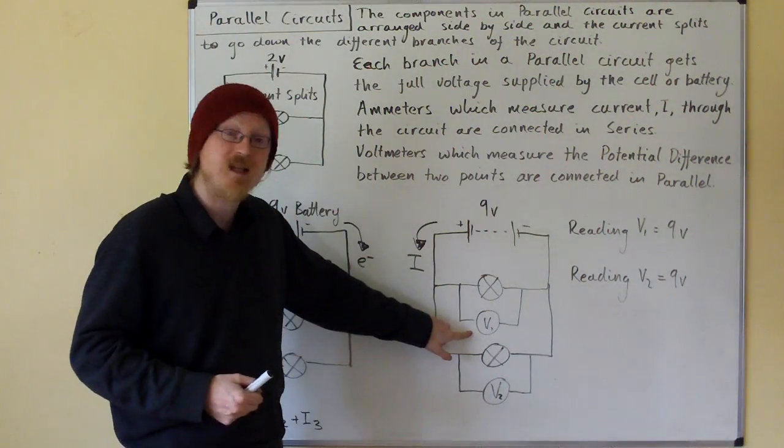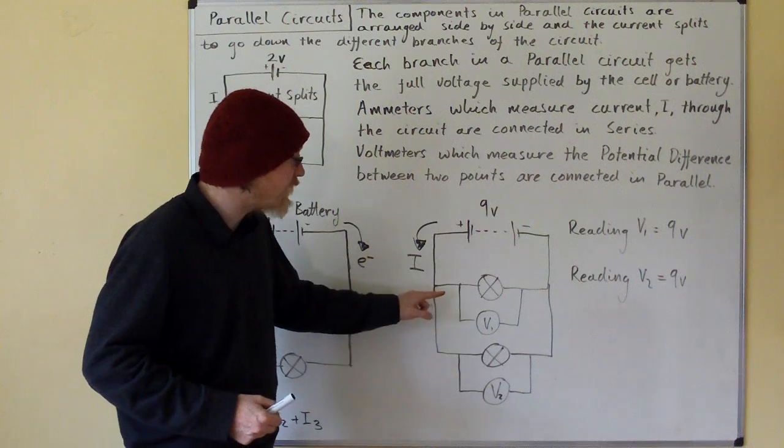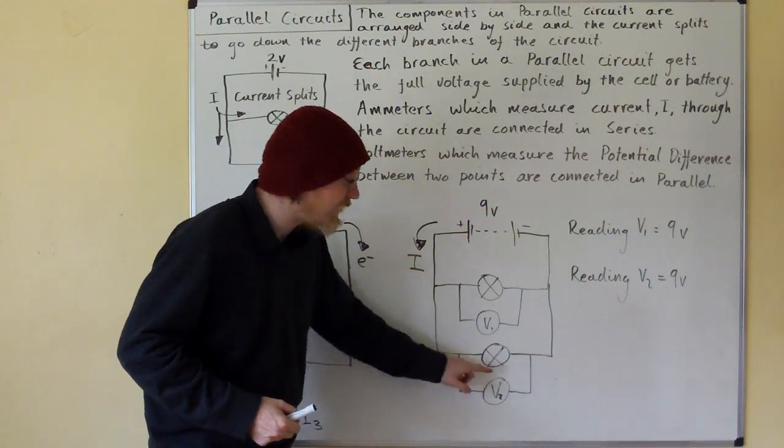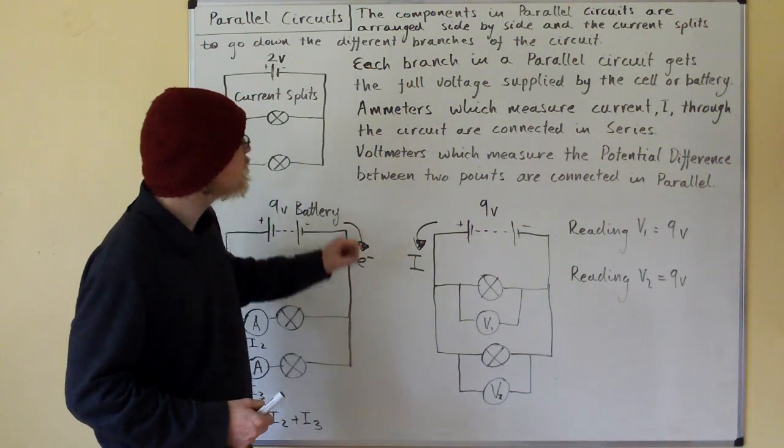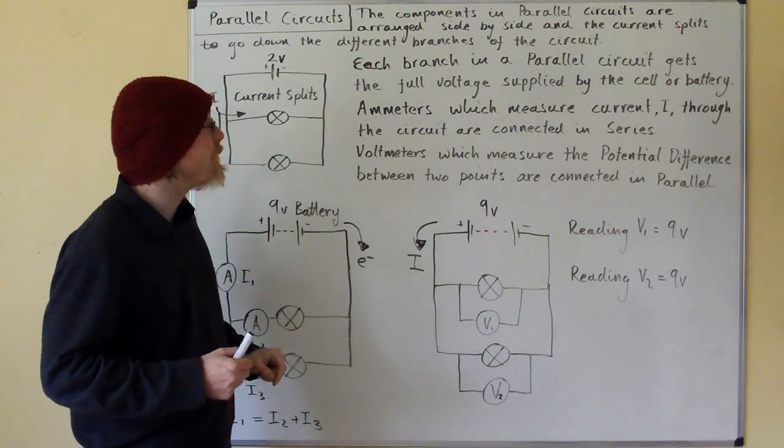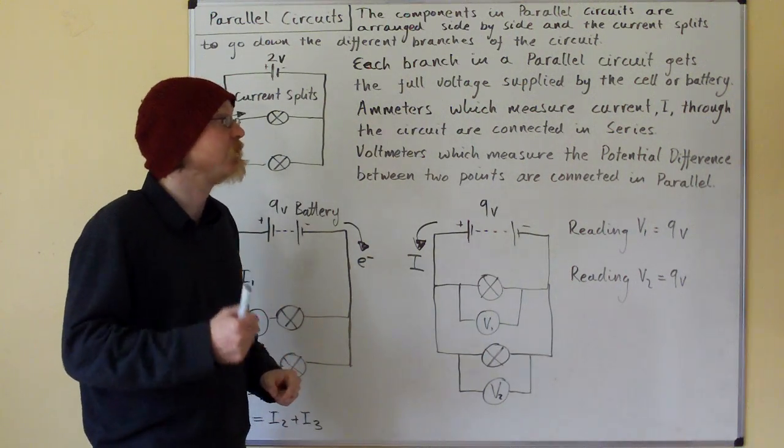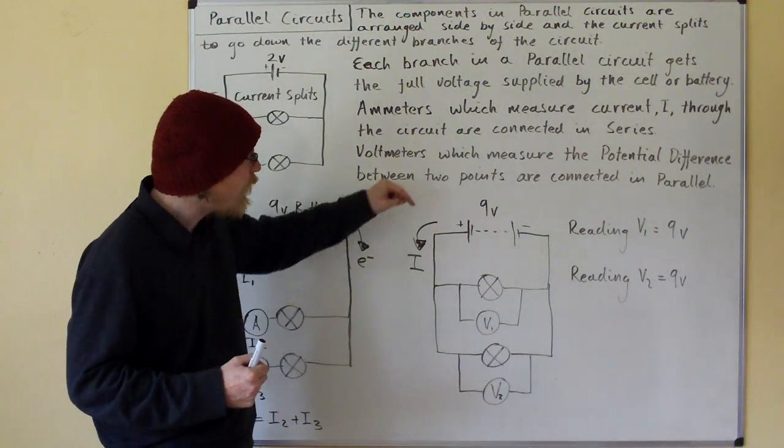Here we're connecting our voltmeters in parallel and we're looking at the potential difference across each of our bulbs. Because each branch in a parallel circuit gets the full voltage supplied by the cell or the battery.